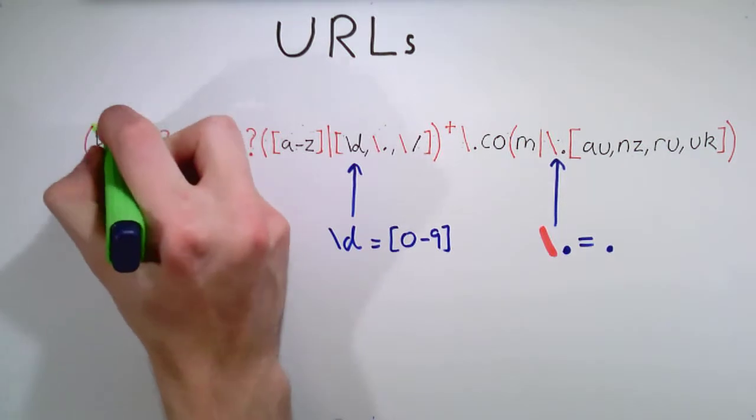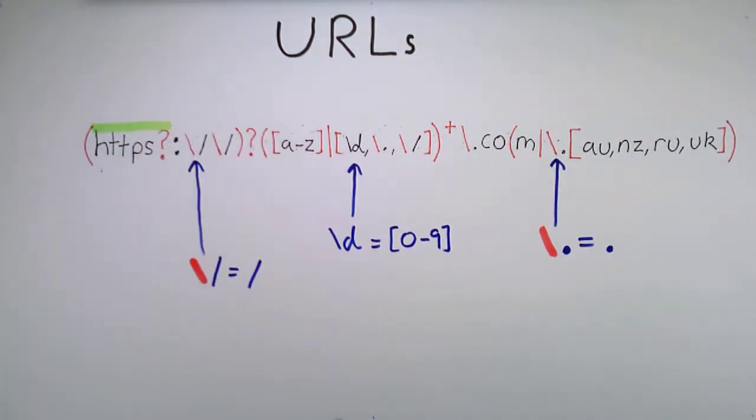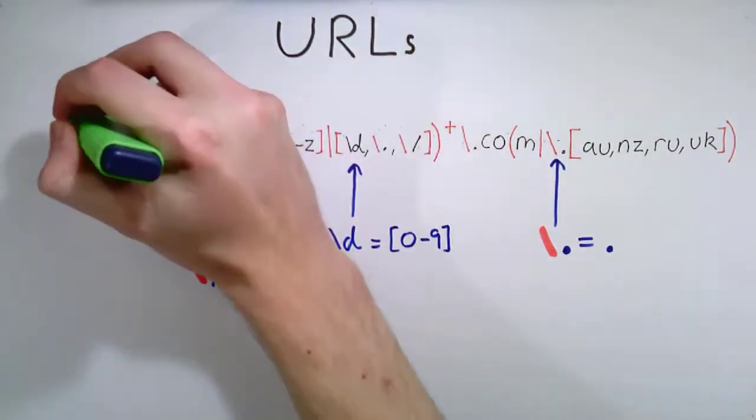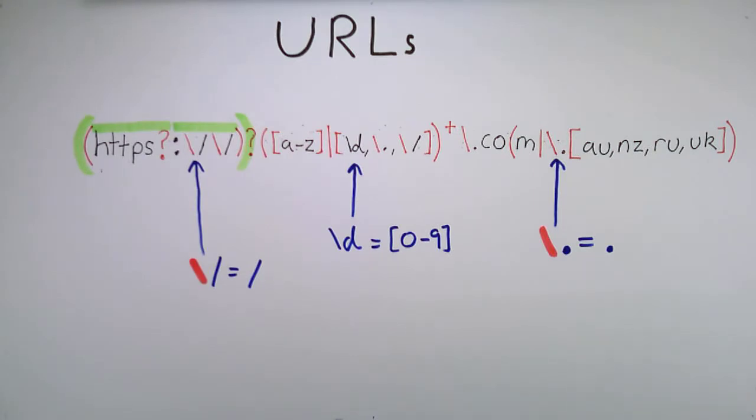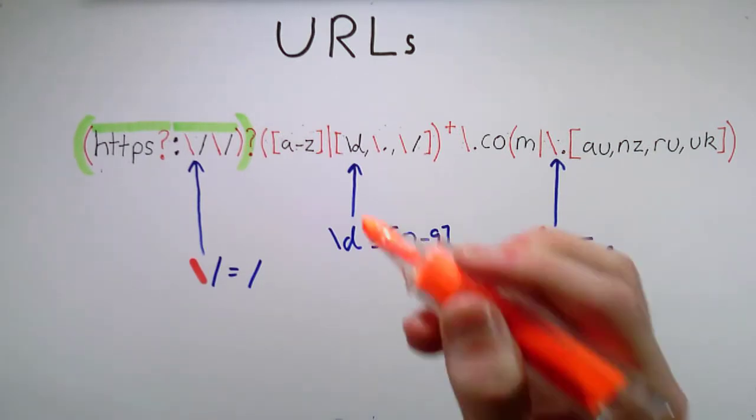So, first we have the hypertext transfer protocol, HTTP, with 0 or 1 of an s, followed by colon, forward slash, forward slash. This is the part of the URL you see before the actual web address. This entire sequence can be left out, so it is enclosed in parentheses and followed by a question mark.